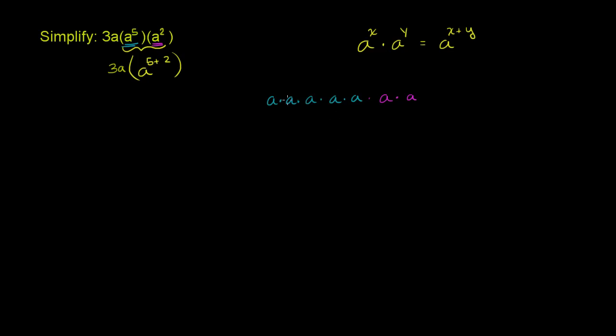Now what have we just done? We're multiplying a times itself five times, and then another two times. We are multiplying a times itself. Let me make it clear: this over here is a to the fifth, and this over here is a squared.